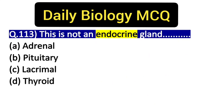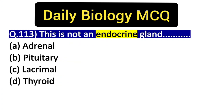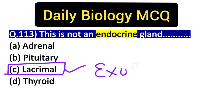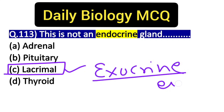Now let's look at the options for which one is not an endocrine gland: adrenal glands, pituitary glands, lacrimal glands, and thyroid glands. The correct answer is Option C — lacrimal glands — which is a type of exocrine gland, and it is related to your eyes.